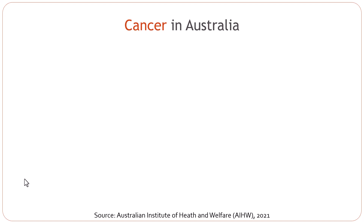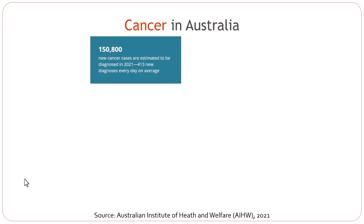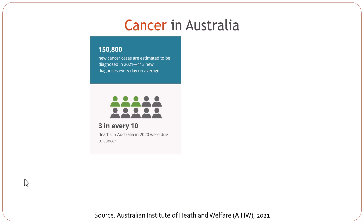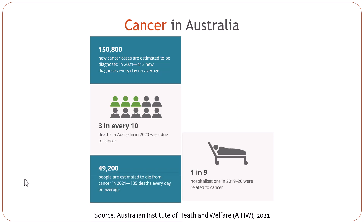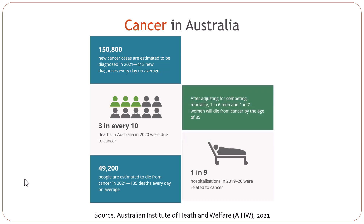Before we dive deeper into the pathophysiology and biology of cancer, let's look at cancer incidence and other stats in Australia. This data is from 2021. Three in every ten deaths in Australia in 2020 were due to cancer. One in nine hospitalizations were related to cancer. 49,200 people were estimated to die from cancer in 2021. After adjusting for competing mortality, one in six men and one in seven women will die from cancer by the age of 85. Almost half of the national cancer burden is attributable to risk factors such as smoking, overweight, and ultraviolet radiation exposure.